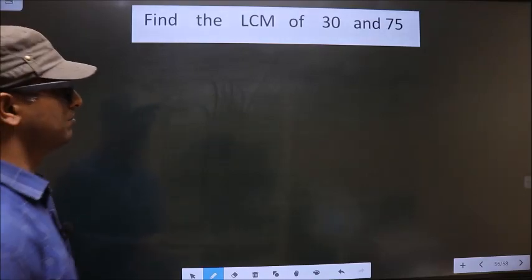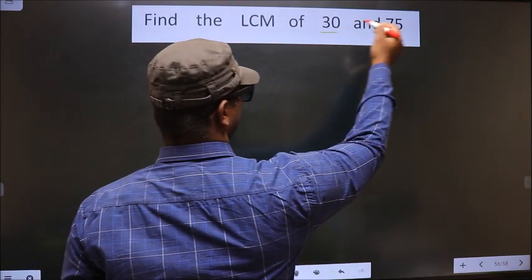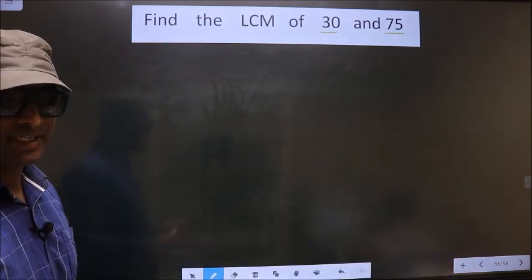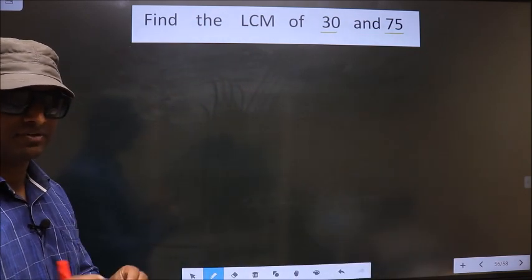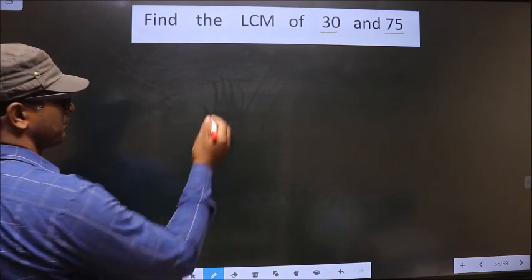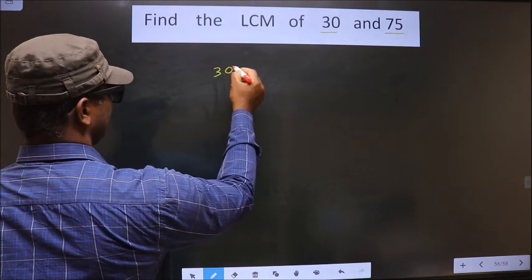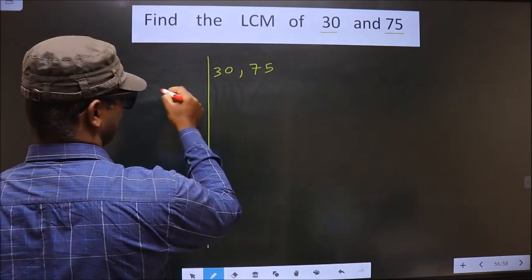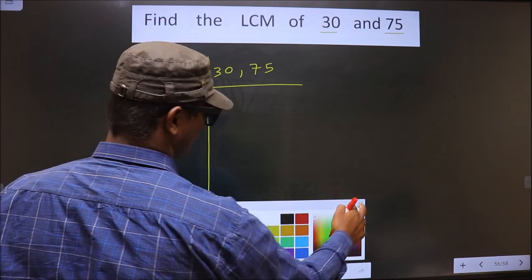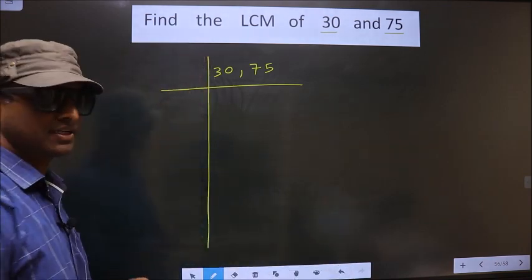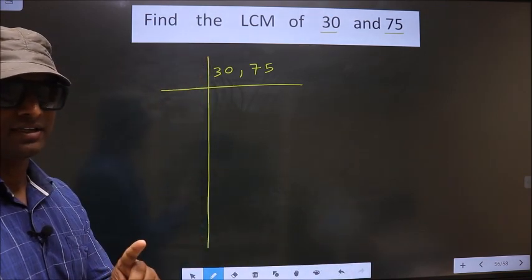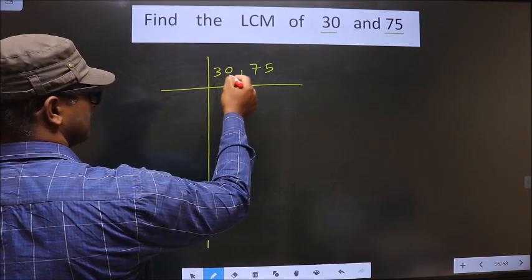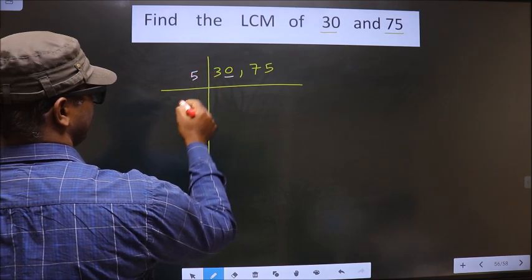Find the LCM of 30 and 75. To find the LCM, first we should frame it in this way. See, 30 and 75. This is our step 1. Next, in this number the last digit is 0, so we take 5 here.